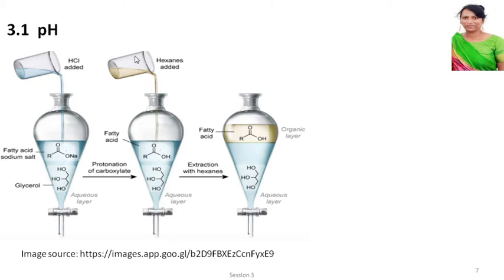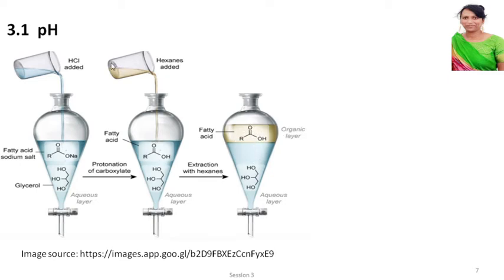Now you add an organic layer. Here in this particular experiment, hexane is used. As soon as you add hexane, there will be a distribution. Glycerol will not go into the organic layer because it has many OH groups and it is very happy to form hydrogen bonds and stay in the aqueous layer. Whereas this organic acid does not like to stay in water — it is more soluble in hexane, and hence it will distribute itself completely into the hexane layer.